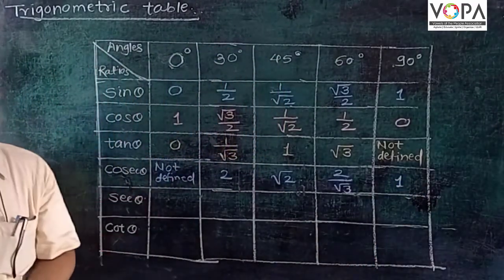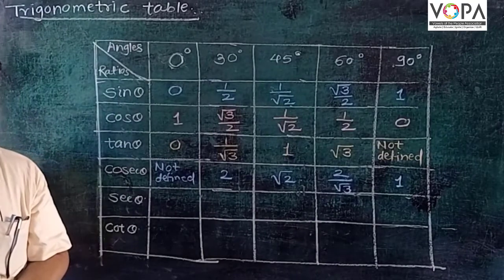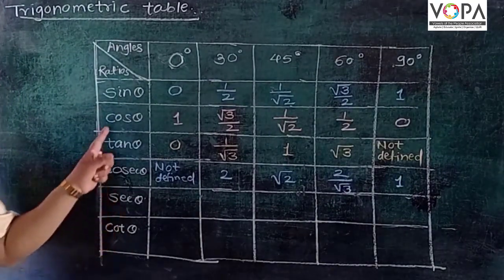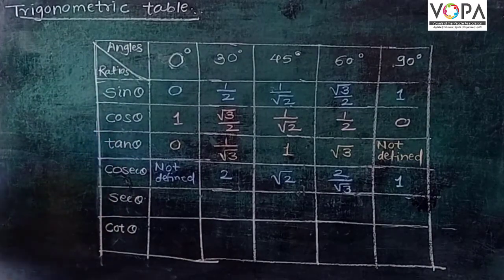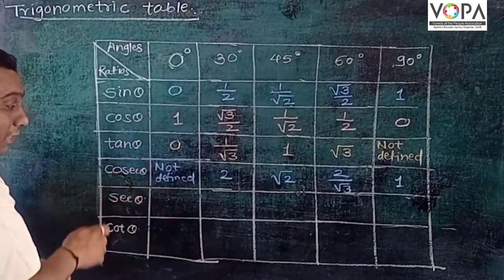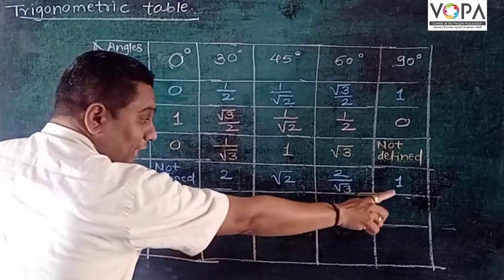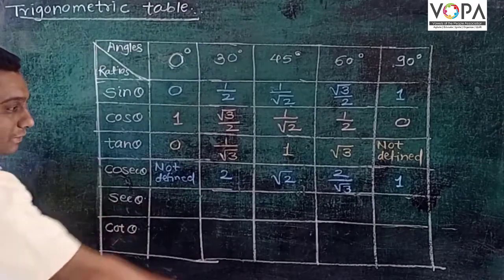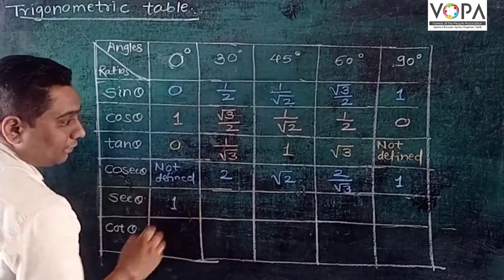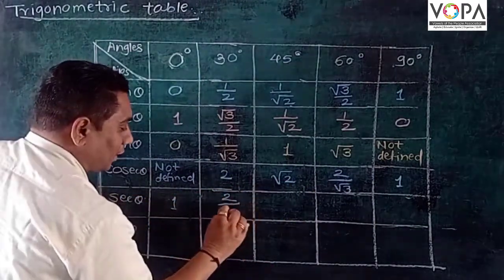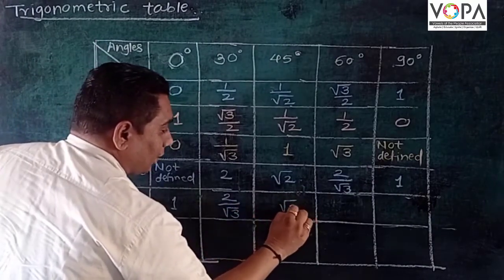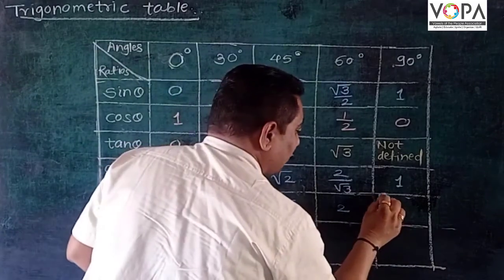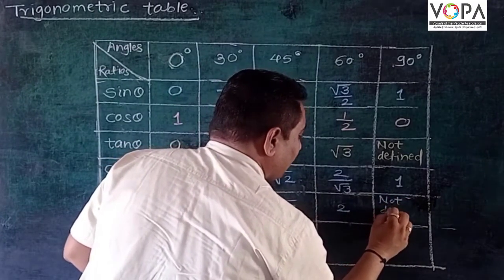Using this relationship, cosec θ can be calculated. Similarly, sec θ = 1/cos θ. So the values of sec θ are: sec 0° = 1, sec 30° = 2/√3, sec 45° = √2, sec 60° = 2, and sec 90° is not defined.